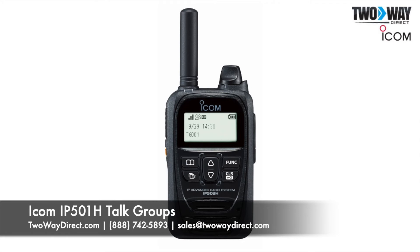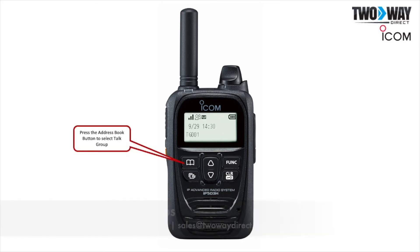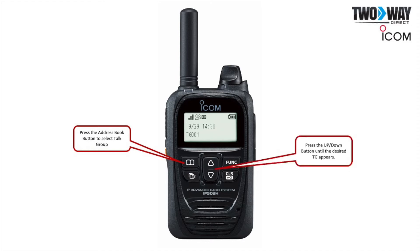To get to the talk groups, first press the Address Book button on the front of the IP501H radio. Next, use the up and down arrow buttons until the desired talk group appears. Finally, press the Push to Talk button to speak to the talk group.